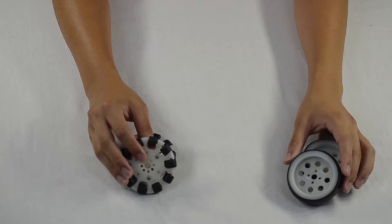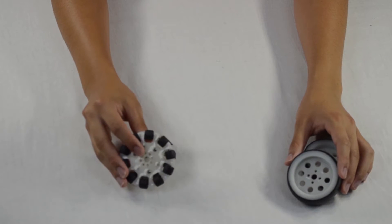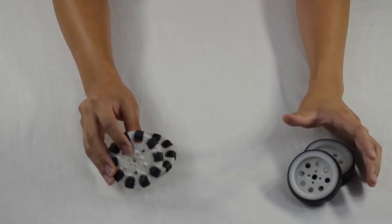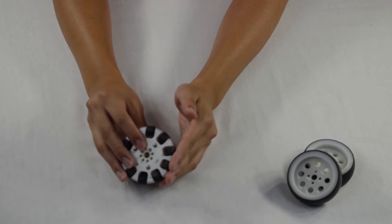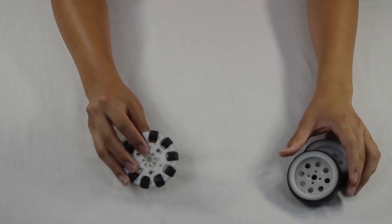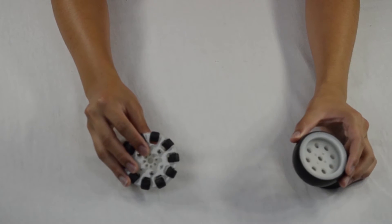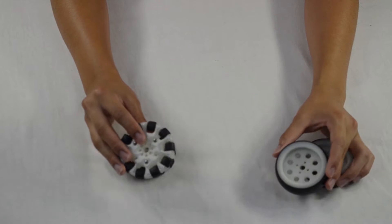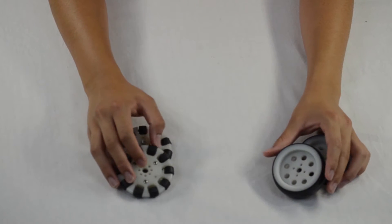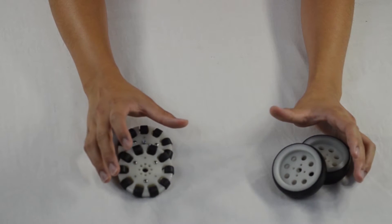The pros and cons of both are, obviously, the omnidirectional wheel can move in all directions but can be pushed very easily because of these wheels, so there's no actual grip. While these can withstand a much larger push but can't move in any direction. So they're kind of the opposites and you kind of have to pick and choose which one you would want on your chassis.